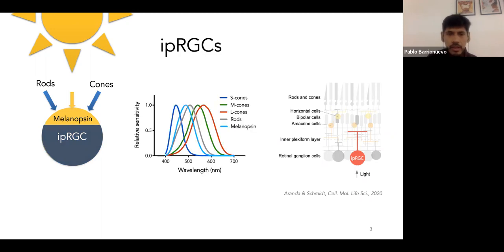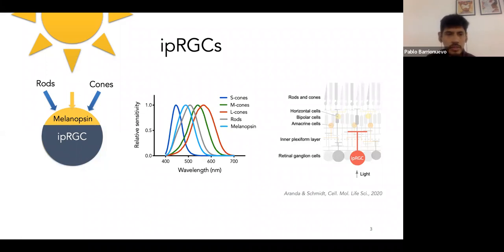Melanopsin is different from the opsins of cones and also from rhodopsin, since the peak wavelength of this photopigment is around 460 to 480 nanometers.